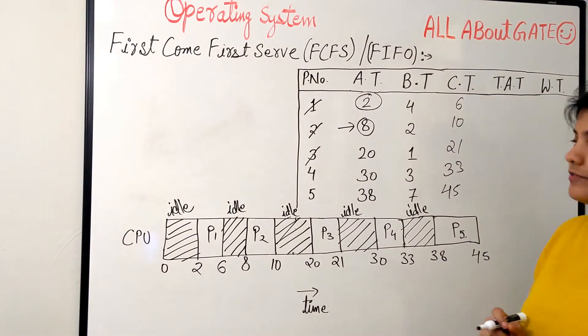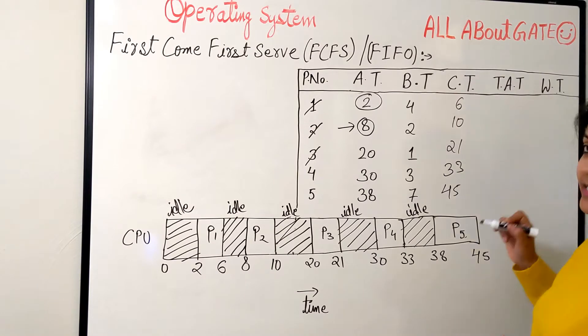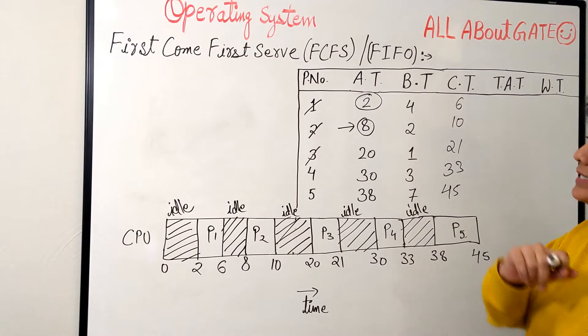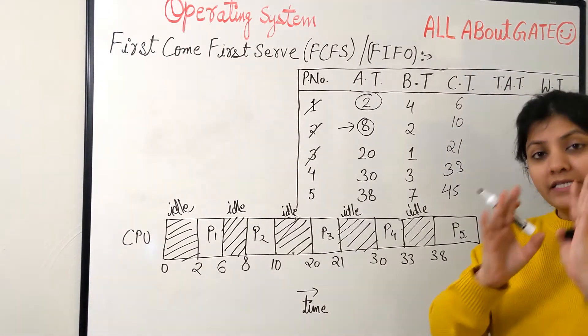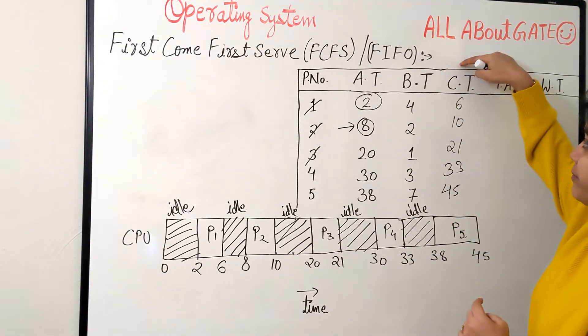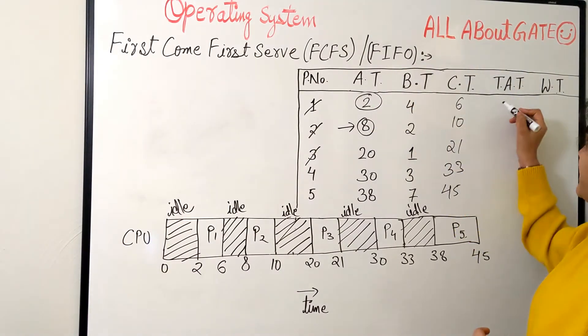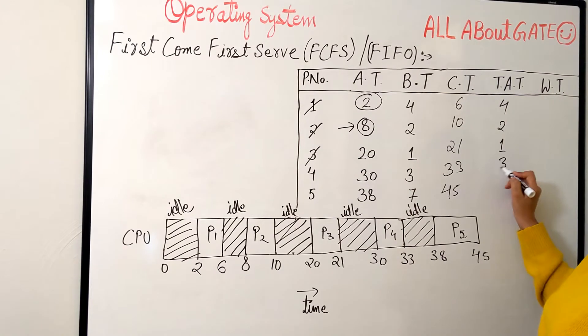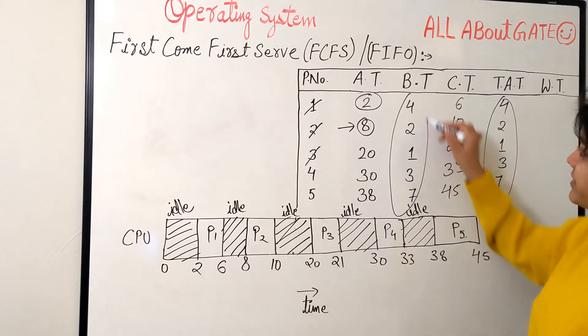Now interesting factor here is going to be the waiting time and the turnaround time. So let's first of all find out the turnaround time which you all understand is nothing but the total amount of time a process is spending in the system. Completion minus arrival. So 6 minus 2 is 4. 10 minus 8 is 2. 21 minus 20 is 1. 33 minus 30 is 3. 45 minus 38 is 7. If you just observe and look at the turnaround time closely with the burst time you will find out it is exactly the same as the burst time.